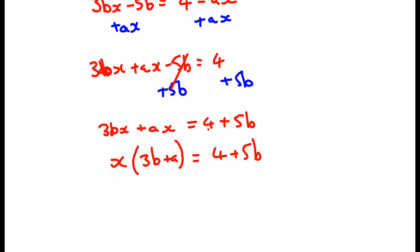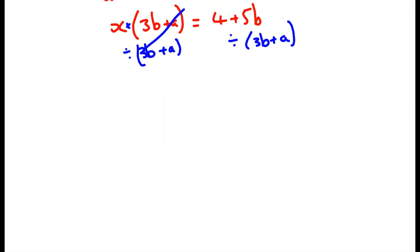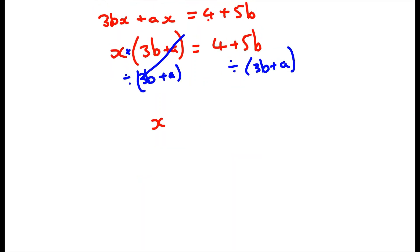So now we have factorized it, we can divide by this bracket, the entire bracket, 3b plus a. Because remember when we have a bracket like this it means x multiplied by the bracket, so a division like this just cancels it out. This is going to leave us with x equaling 4 plus 5b all divided by 3b plus a.